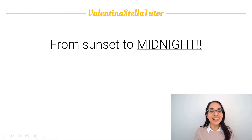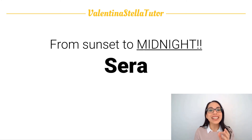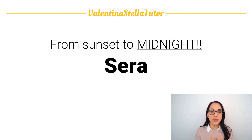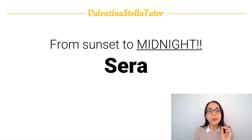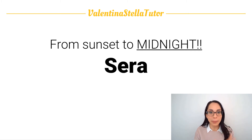From sunset to midnight, that part of the day is called 'sera' in Italian. Repeat after me: sera. I know this may sound weird, but that's how it is in Italian — we call 'sera' everything that goes from around sunset to midnight. The whole period up to midnight is 'sera.' This is probably the most common mistake students make: they don't realize that 'sera' in Italian lasts longer — it lasts until midnight.